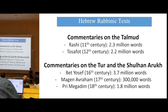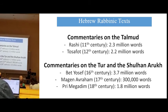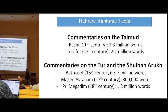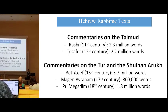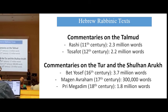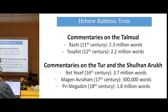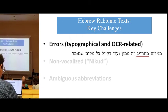Most of the work done on Hebrew NLP has been done on modern Hebrew, whereas our work focuses on rabbinic Hebrew from the medieval and early modern times. For example, commentaries on the Talmud from the 11th and 12th century, and commentaries on the Torah and the Shulchan Aruch from the 16th, 17th, and 18th century.